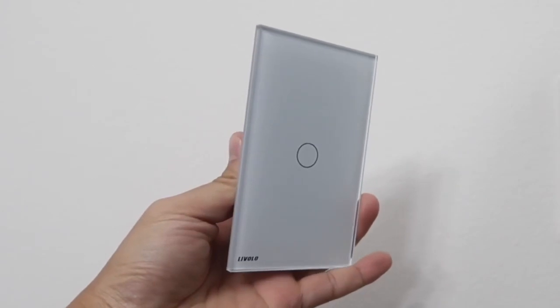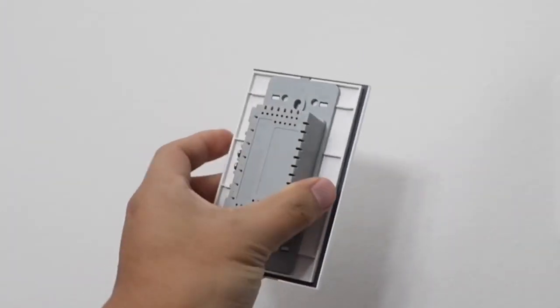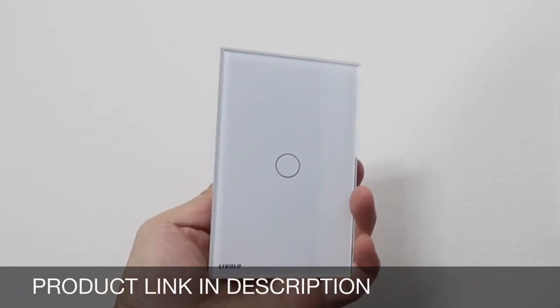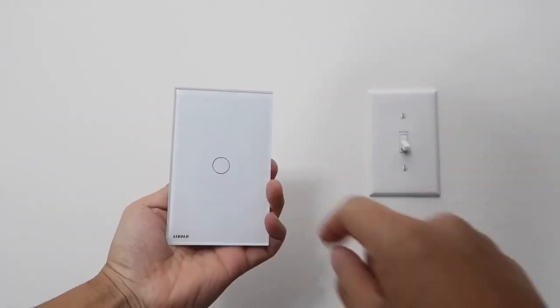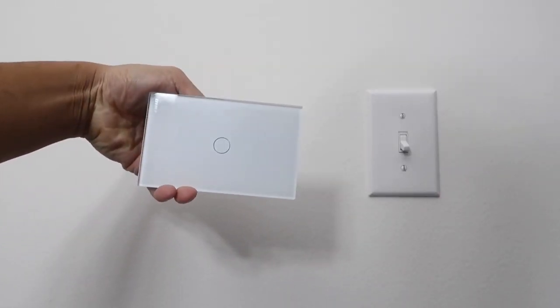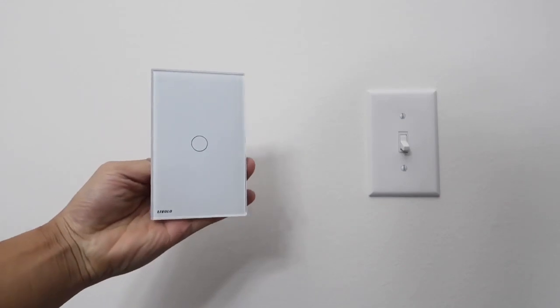This is the Livolo tempered glass panel light switch with touch sensor. This is a single pole, one gang, one way light switch. However, you can get the two gang, two way or even three way if you choose. They have all the different options to perfectly fit your home and needs.